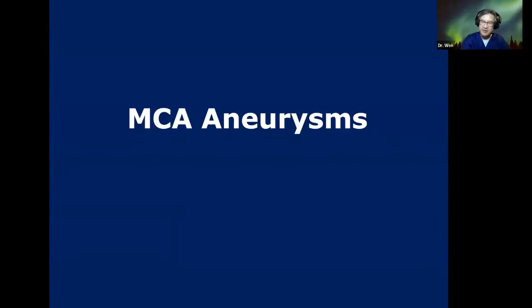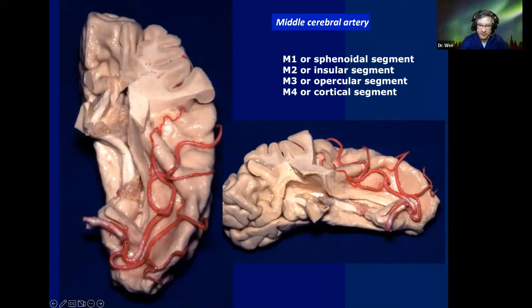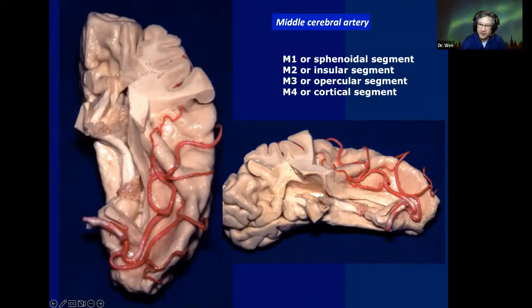These are some of the basic anatomical concepts we must have in mind when dealing with MCA aneurysms. To summarize: M1 (the sphenoid segment) runs on the basal surface, then we have the genu, then M2 segments related to the insula. On the medial view, I would like to point out Heschl's gyrus (anterior transverse temporal gyrus), the vertical part of planum polare, and the horizontal part of planum polare.